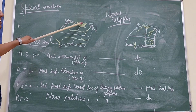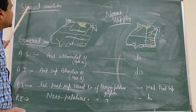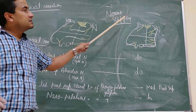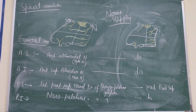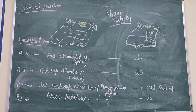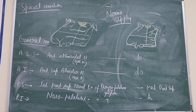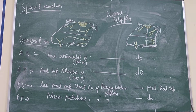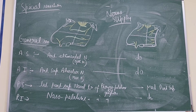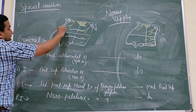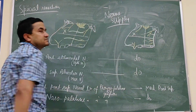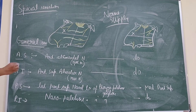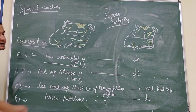The upper region — the superior part — special sensation is carried by the olfactory nerve. Now for general sensation, which means pain, touch, and temperature: the anterosuperior quadrant is supplied by the anterior ethmoidal nerve.